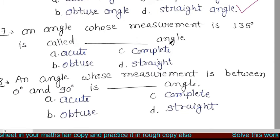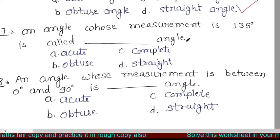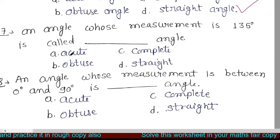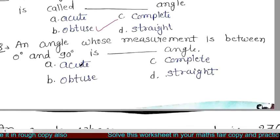The next question is: an angle whose measurement is 135 degrees. ऐसा angle जिसका measurement 135 degree होता है वह कौन सा angle होता है? Options: acute, complete, obtuse, straight. So it is obtuse angle.